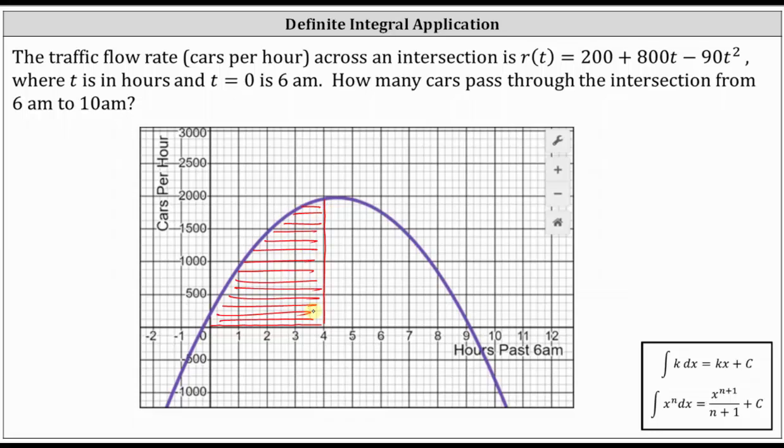This area does represent the number of cars passing through the intersection from 6 a.m. to 10 a.m., because this function is the flow rate function in cars per hour, and the horizontal axis is the number of hours past 6 a.m. Notice to find the area, we would be multiplying the units of hours by the units of cars per hour, which does give us cars, in this case, the number of cars passing through the intersection from 6 a.m. to 10 a.m.